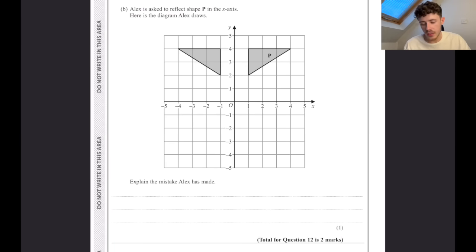Alex is asked to reflect shape P in the x-axis. Here is the diagram Alex draws. Explain the mistake. Alex has reflected it in the y-axis to go across there, not the x-axis. And that is the sentence I would put if I was in the exam.